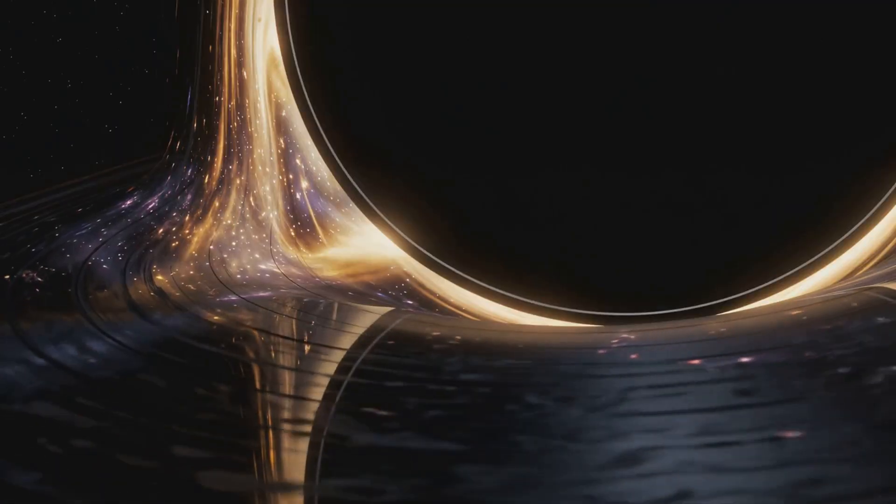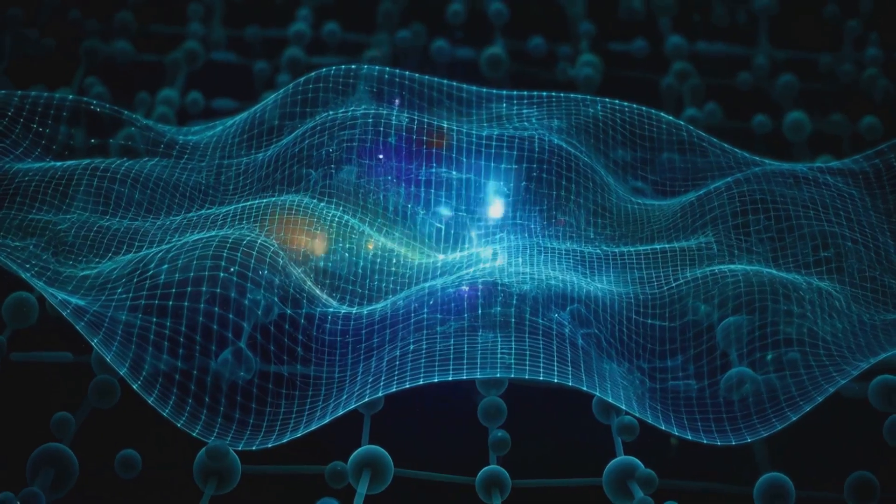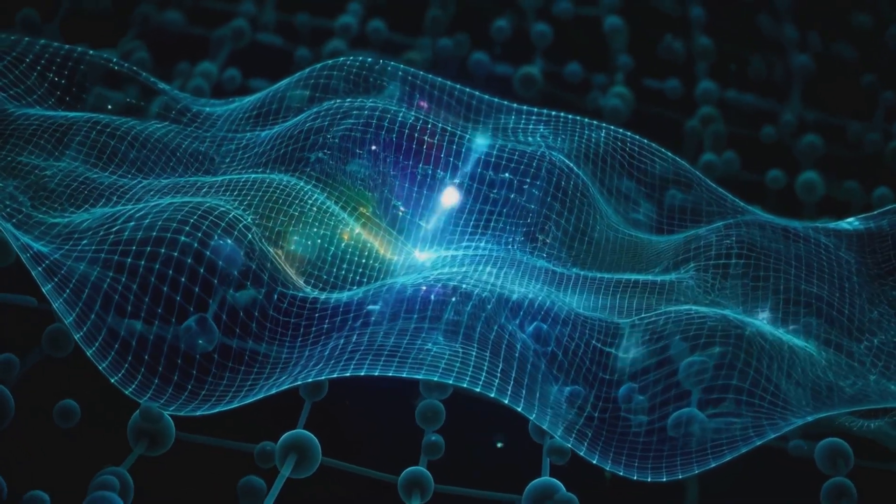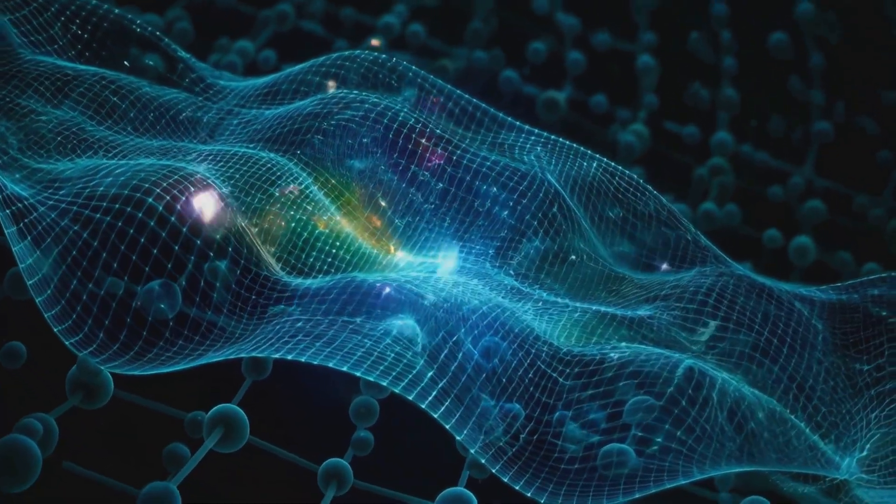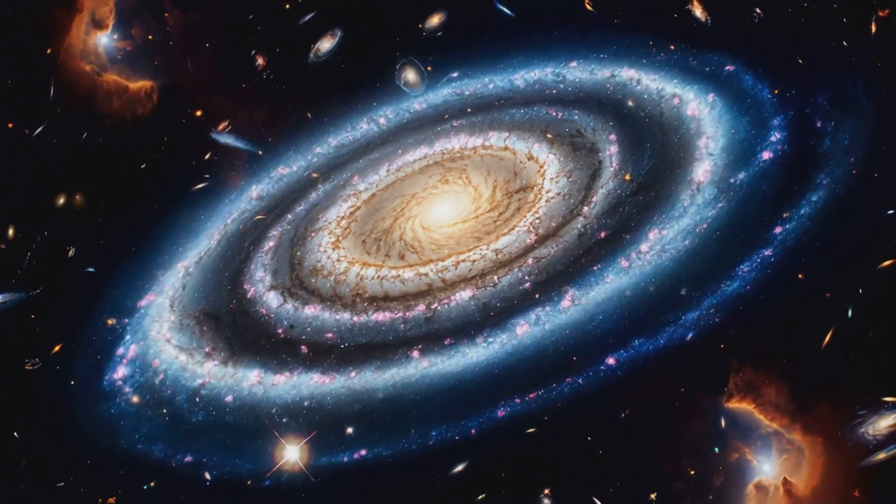The black hole with its singularity and event horizon is a microcosm of the universe. The oscillation of Hawking radiation creates interference patterns that ripple across spacetime, forming everything we see, from the smallest particle to the largest galaxy.